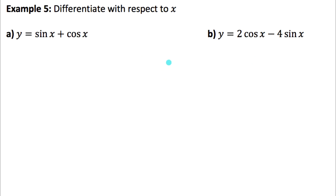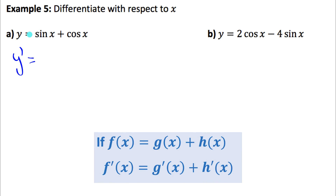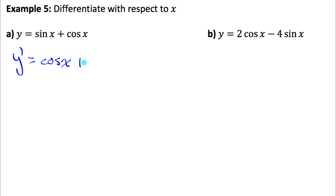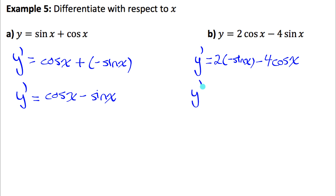Now let's do functions that are sums and differences of trig functions. For part A, the derivative of a sum equals the sum of the derivatives: derivative of sine x is cos x, plus derivative of cos x is negative sine x, which simplifies to cos x minus sine x. For part B: y prime equals the derivative of 2 cos x, which is 2 times negative sine x, minus the derivative of 4 sine x, which is 4 times cos x. Simplifying, that gives negative 2 sine x minus 4 cos x.